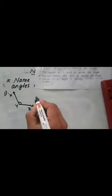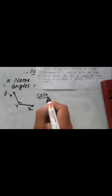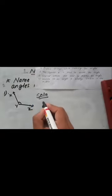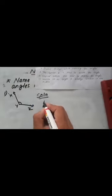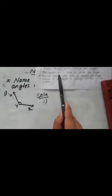The symbol is used to denote the angle. So let's see the solution. While naming the angle, the very first thing you need to consider is you should write the symbol of angle.